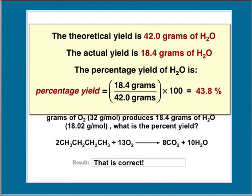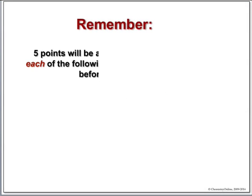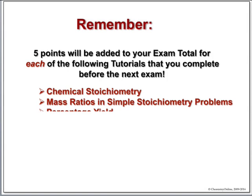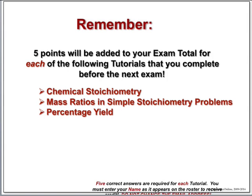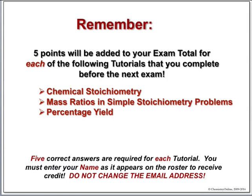On the exam, these things are going to be presented in terms of concepts more than complicated calculations. To get yourself prepared, remember we have three tutorials: stoichiometry, mass ratios, and percentage yield — five points each on the next exam.